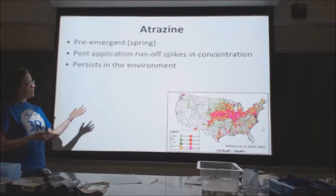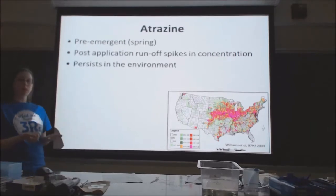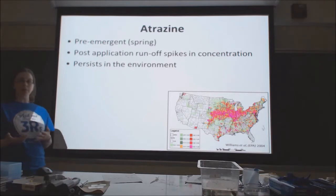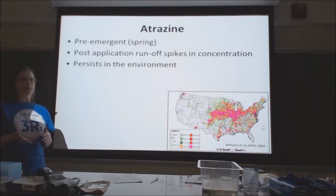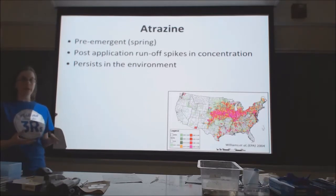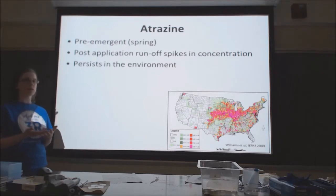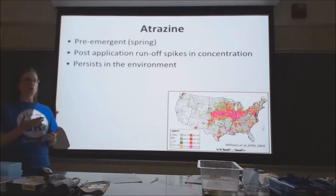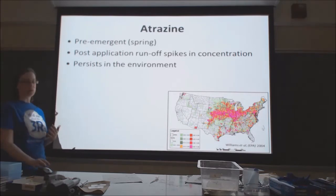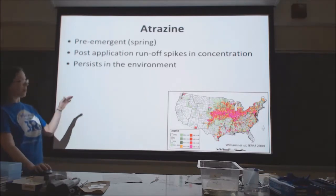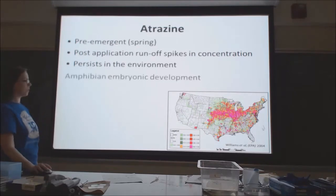Atrazine is applied in the springtime, which is when many amphibians are mating and laying eggs in bodies of water. These bodies of water are sometimes vernal ponds — seasonal ponds that are only present in the spring during periods of more rain. It's possible that these vernal ponds could have higher levels of atrazine during times when amphibian embryos are undergoing rapid developmental processes.